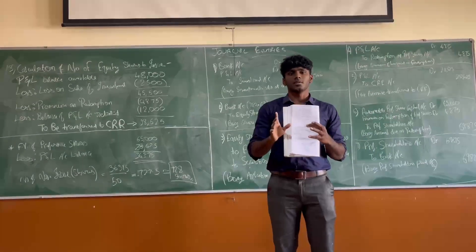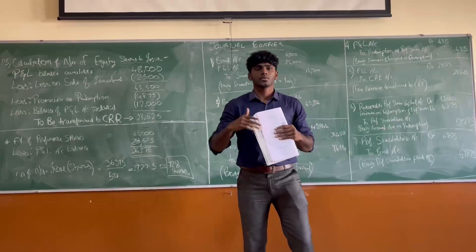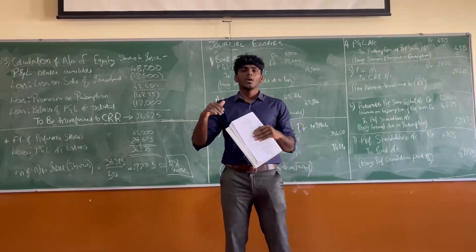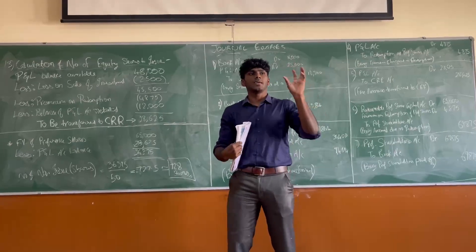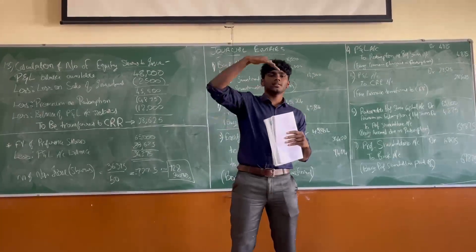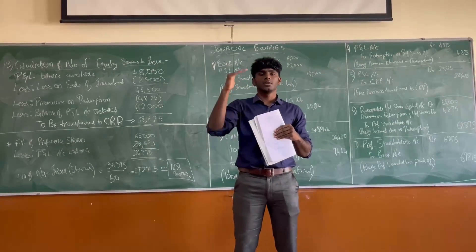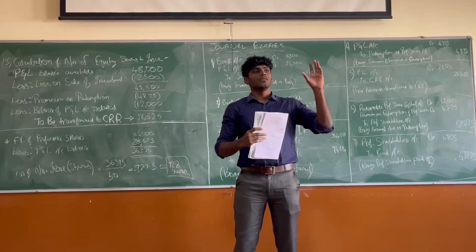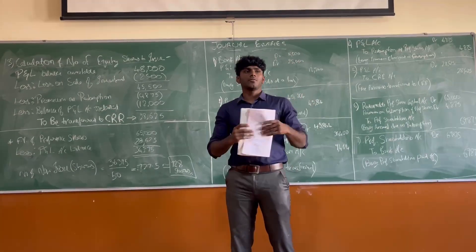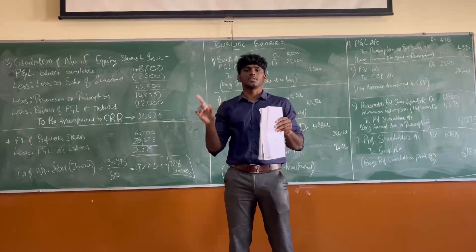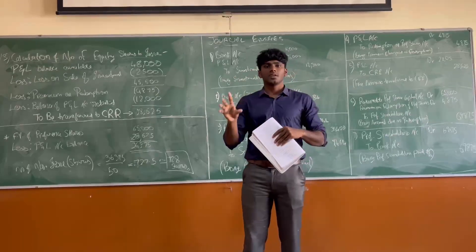So what is Capital Redemption Reserve? Every company has a share capital. When it's paying off the redemption for preference shares, it's basically paying off its capital, which creates an imbalance. To correct this imbalance, we transfer some amount from the profits or free reserves of the company to Capital Redemption Reserve to balance the scale. That's the concept of CRR. When you use the general reserves to pay off redemption, you transfer the same amount to CRR — that's the rule of accounting.